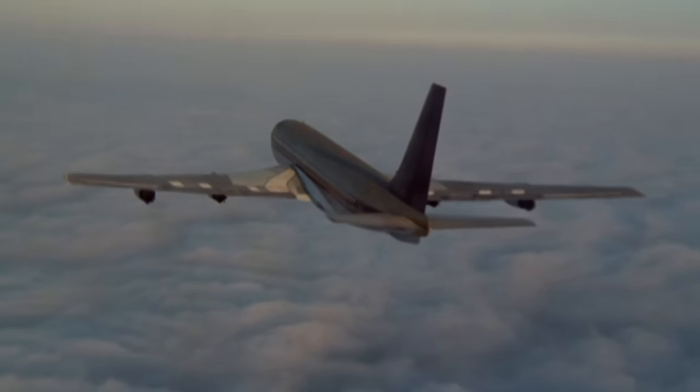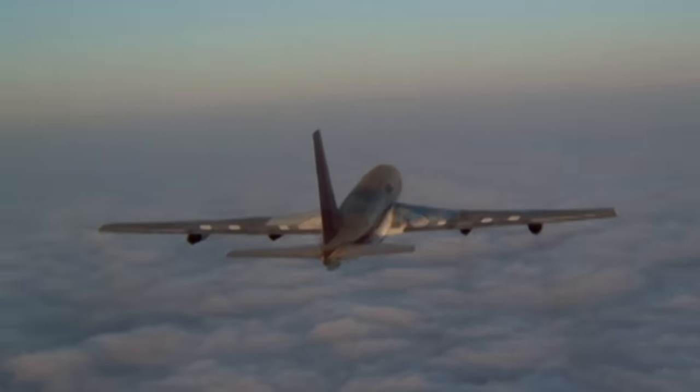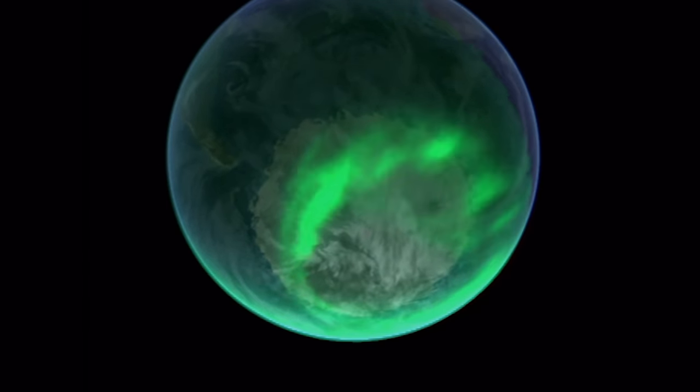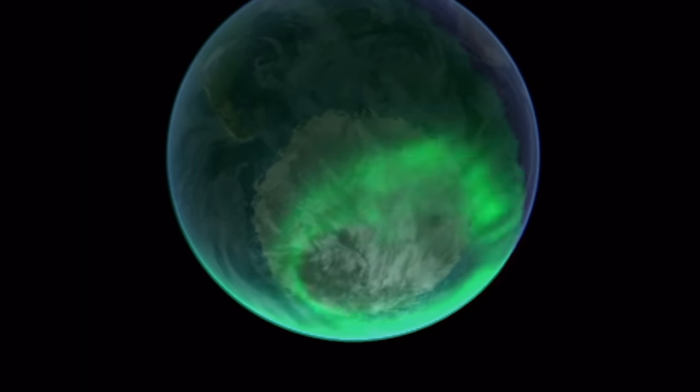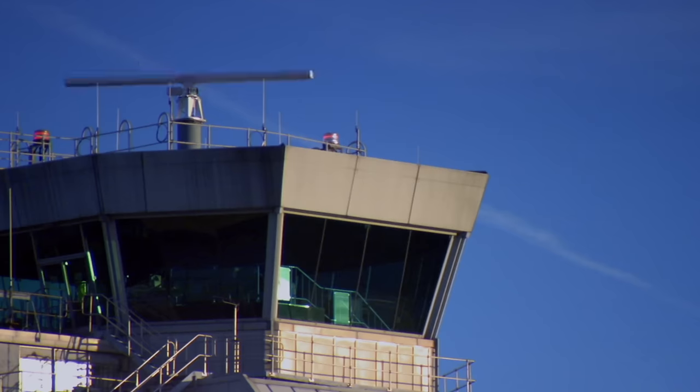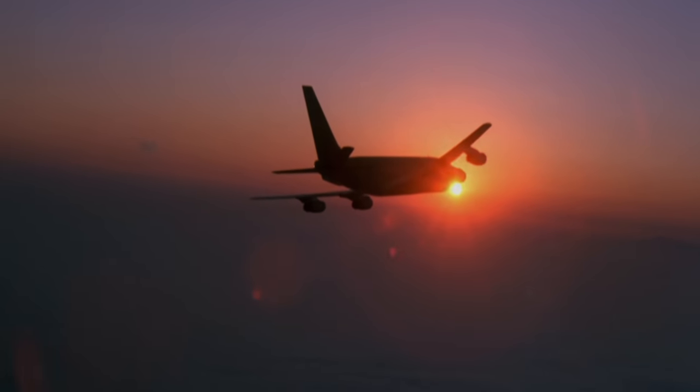This high-altitude battle can cause problems for airliners. At the poles, the atmosphere is especially vulnerable to large bursts of radiation. The wave of energy causes havoc in the upper atmosphere, disrupting GPS systems and blacking out radio signals. During intense storms, passenger aircraft have to divert to lower altitudes in order to regain communication with air traffic control.